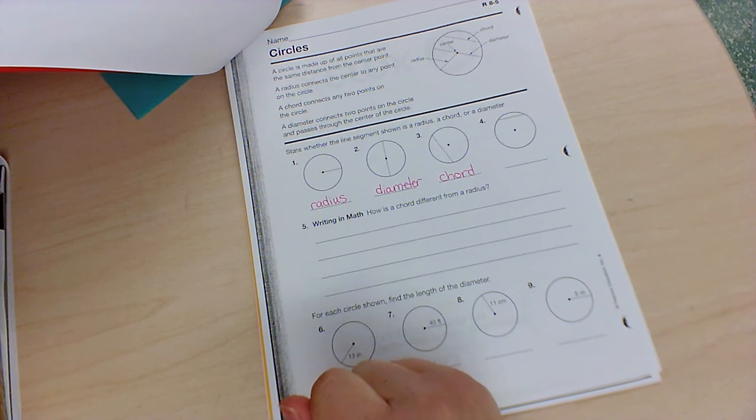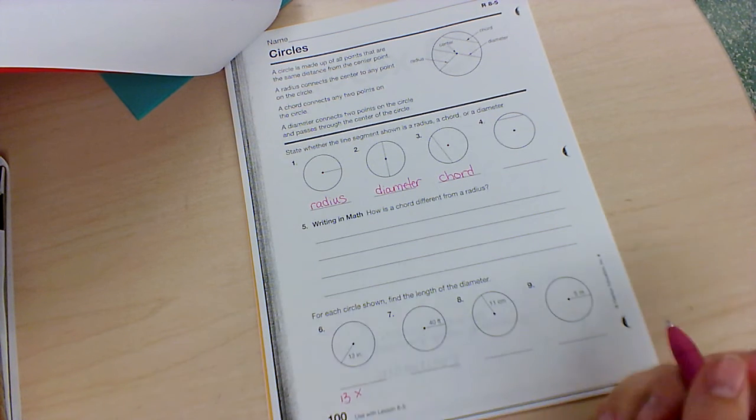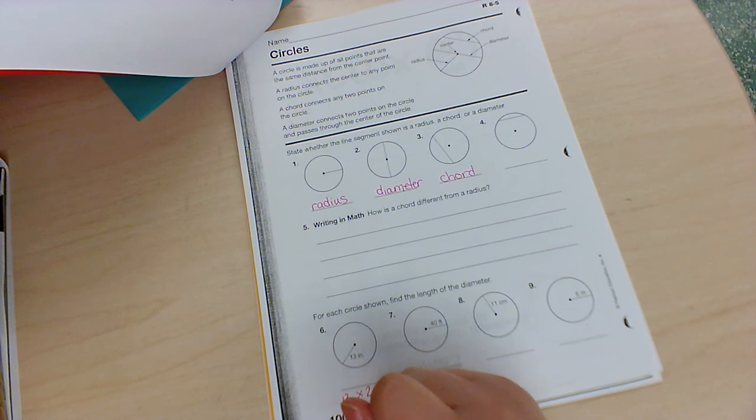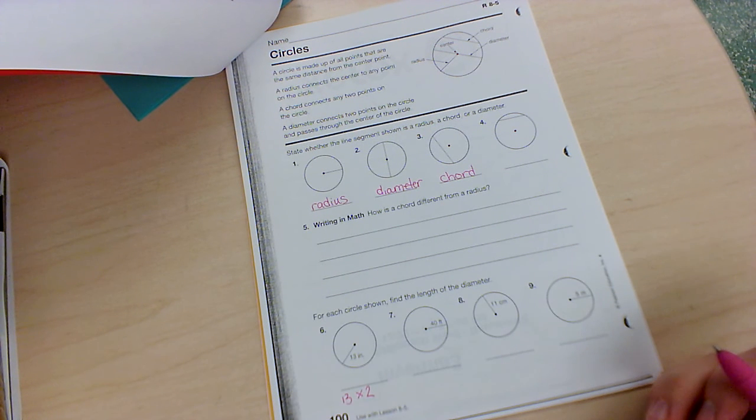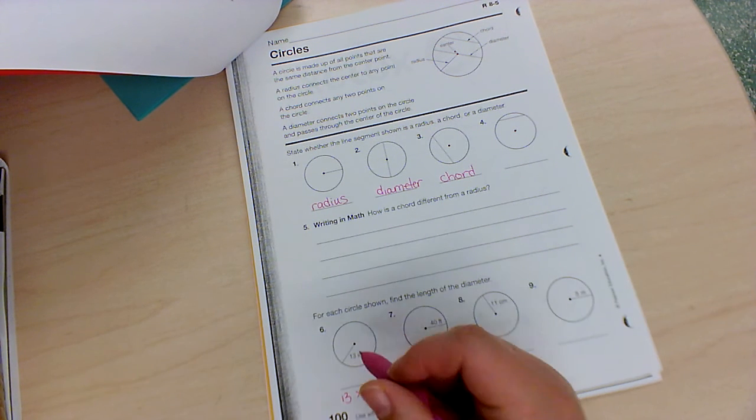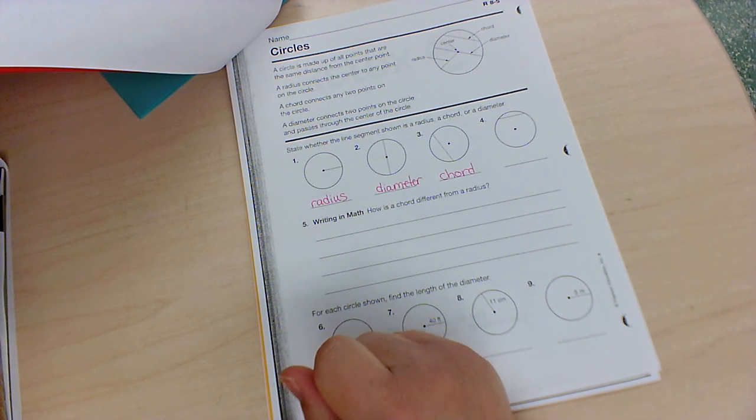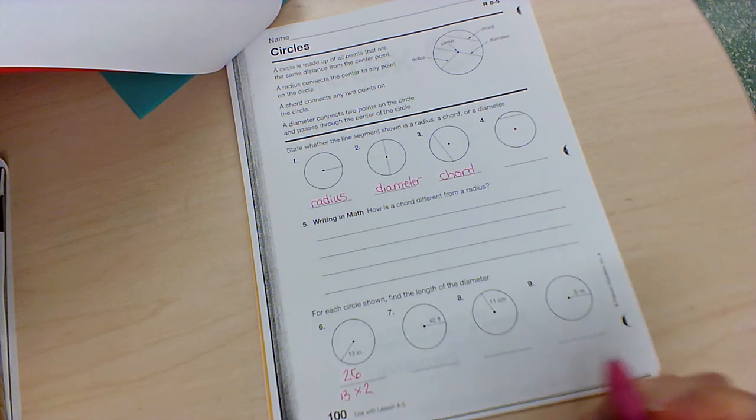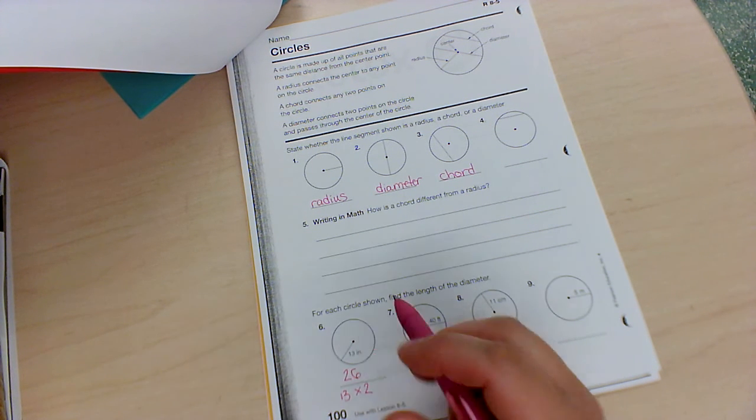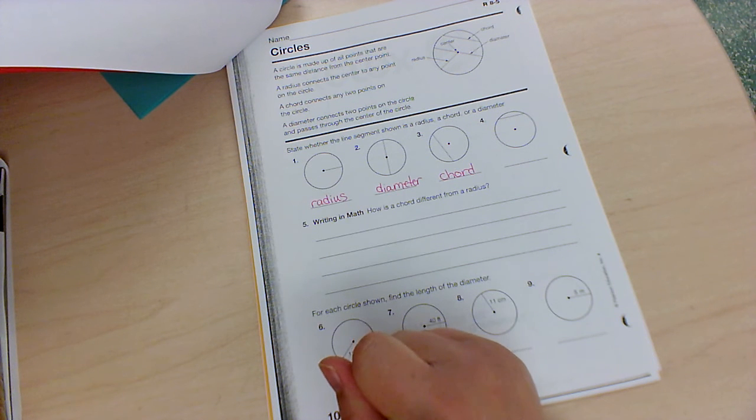13 times 2, or 13 plus 13, and that will tell us the diameter. So 13 times 2 is 26, and this is in inches, so 26 inches.